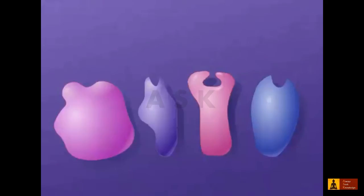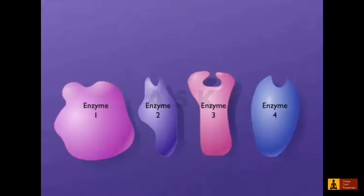Organisms contain many different kinds of enzymes that catalyze a variety of different reactions. Many of these reactions, such as those involved in the biosynthesis of an amino acid, are carried out in a specific sequence called a biochemical pathway.